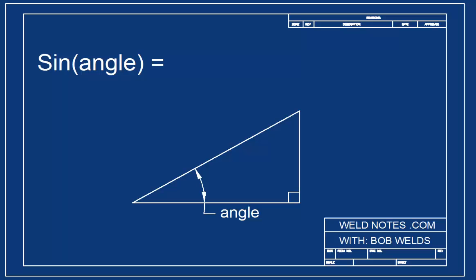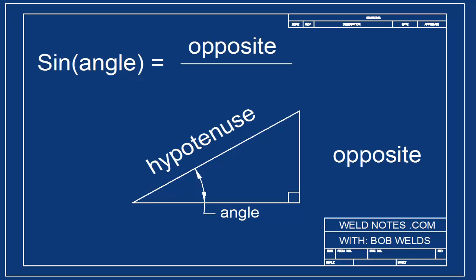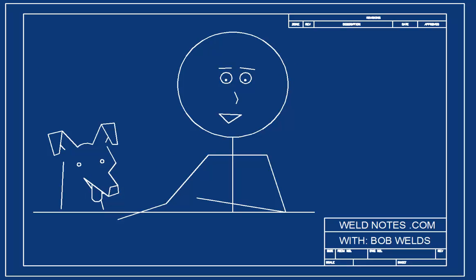The sine of an angle tells us the answer to the division problem we get when we put the opposite side, that is the side across from the angle, over the hypotenuse. You might be wondering, what good it is to know that ratio since we already know how to divide 1 by 2 or 4 by 8. Let's take a closer look.